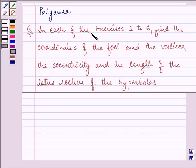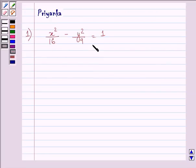It says in each of the exercises 1 to 6, find the coordinates of the foci and the vertices, the eccentricity and the length of the latus rectum of the hyperbolas. Now, the equation which is given to us is x square by 16 minus y square by 9 is equal to 1.